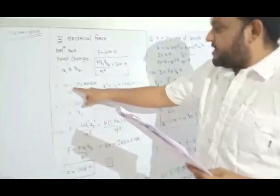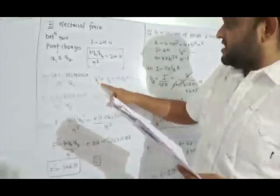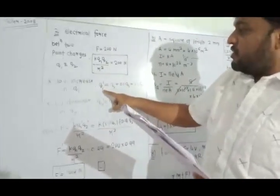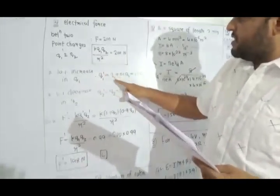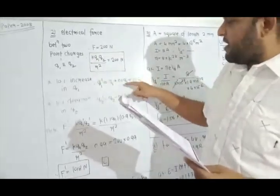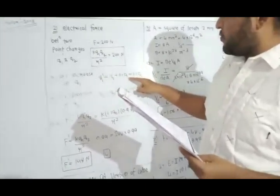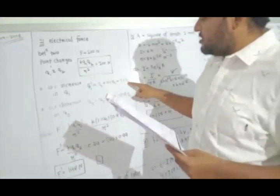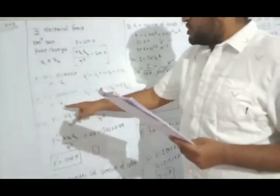Q1 is increased by 10%, so Q1' = Q1 + (10/100)·Q1 = Q1 + 0.1·Q1 = 1.1·Q1.